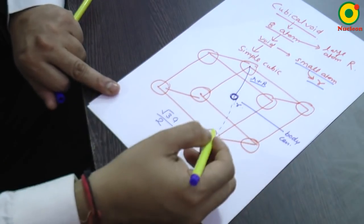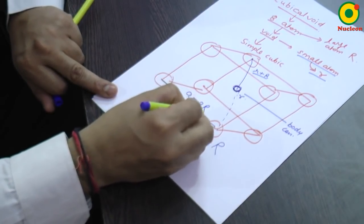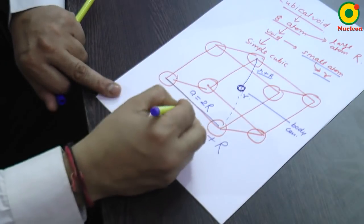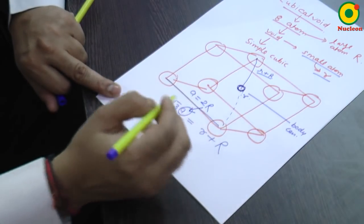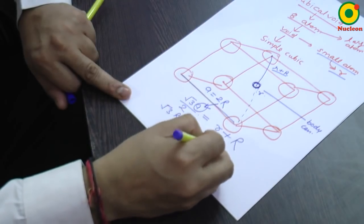And already we know that since these two atoms are touching each other, a is equal to two capital R. If I put a is equal to two capital R, the relation will be root three R is equal to r plus R.